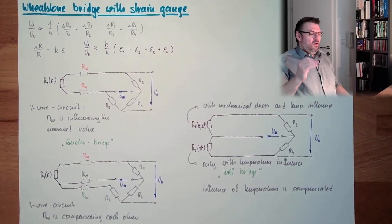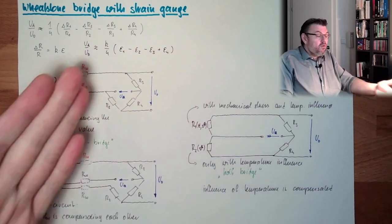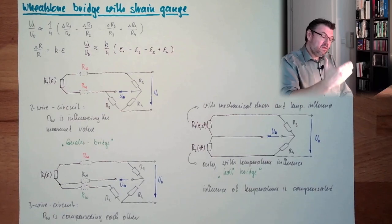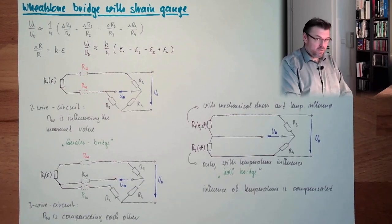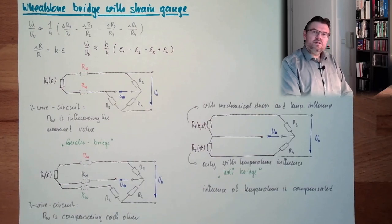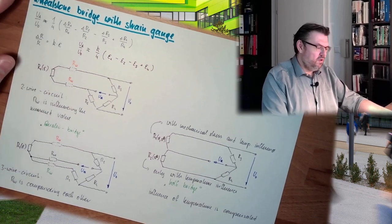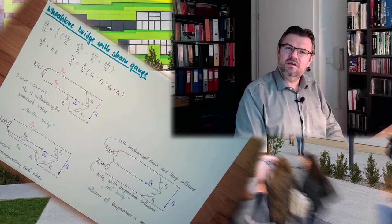This is how strain gauges can be used — replacing one, two, or all four resistors. You can replace all four resistors with strain gauges and measure quite a lot of things; you only have to think about how to apply them cleverly to maximize sensitivity. The goal is always to bring the UA change to a maximum with the same load, so you can measure tinier forces.